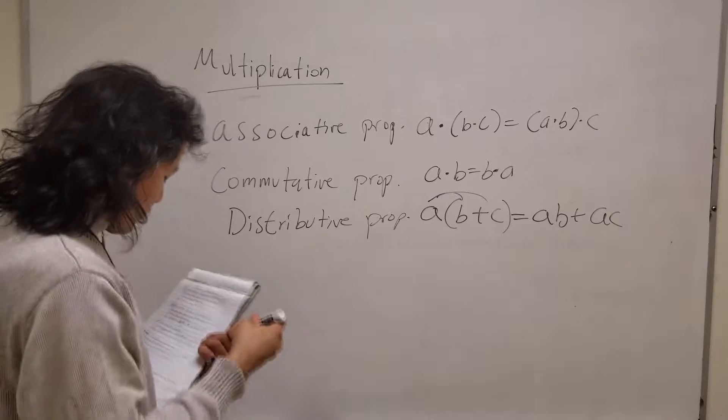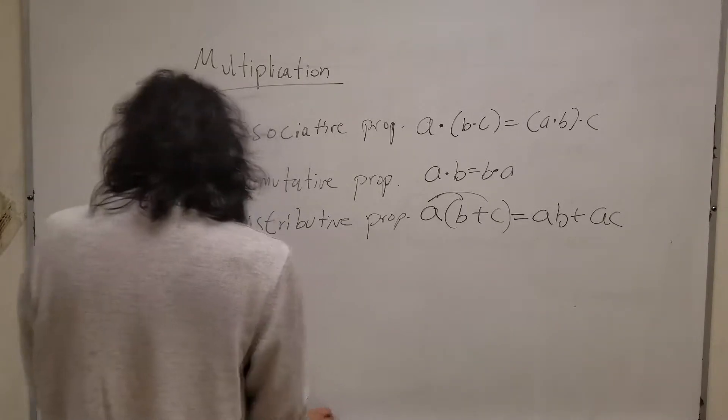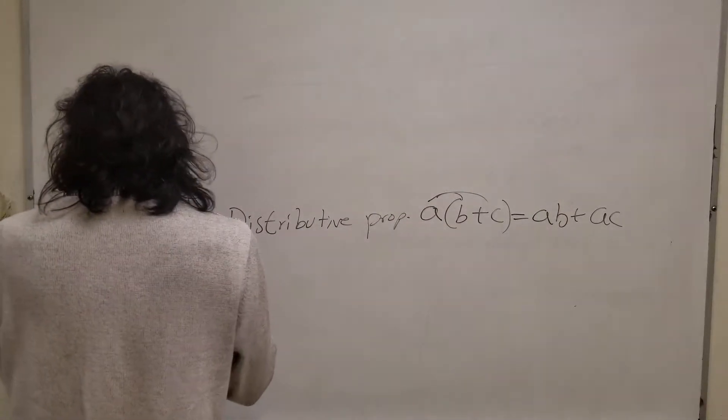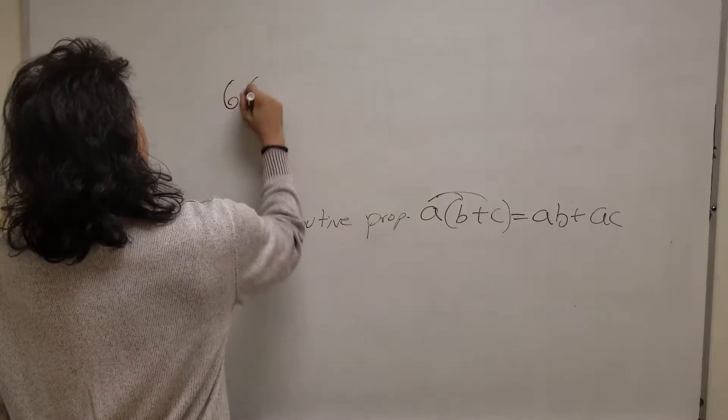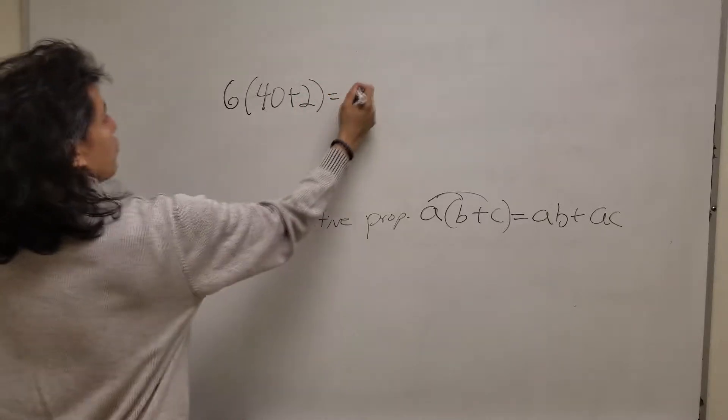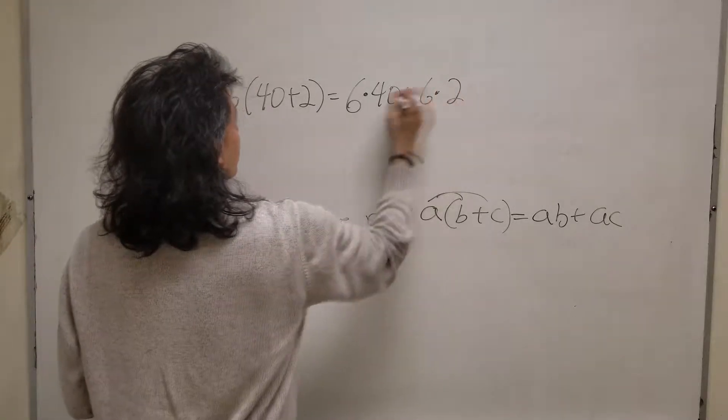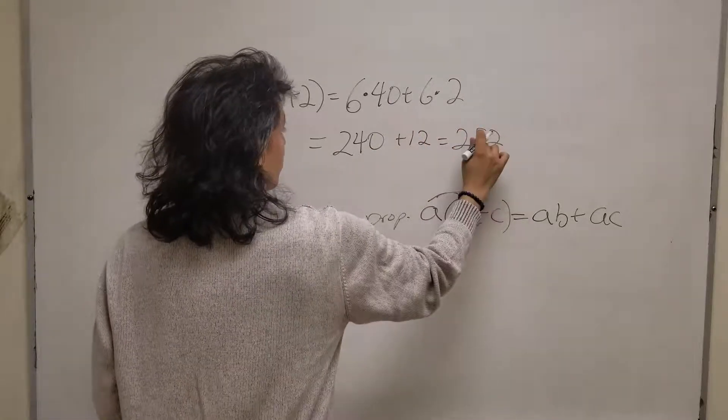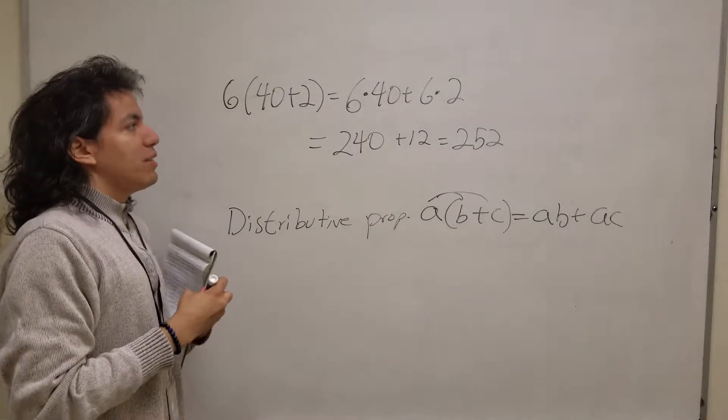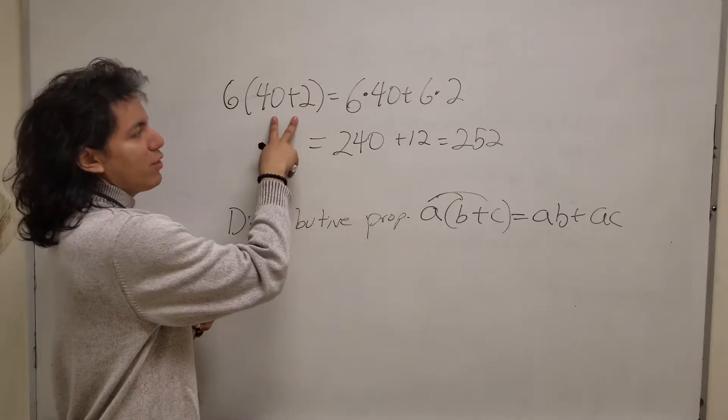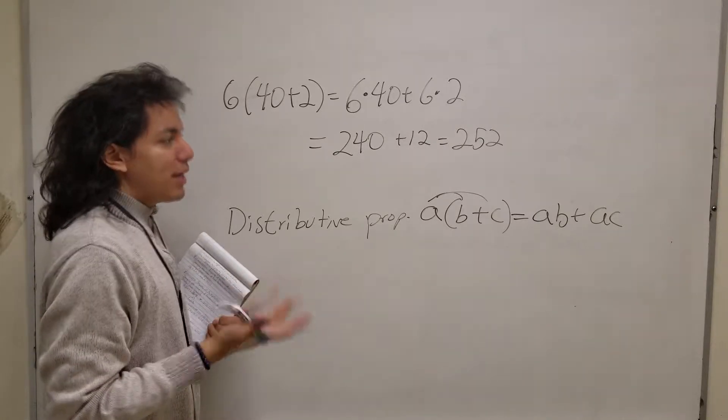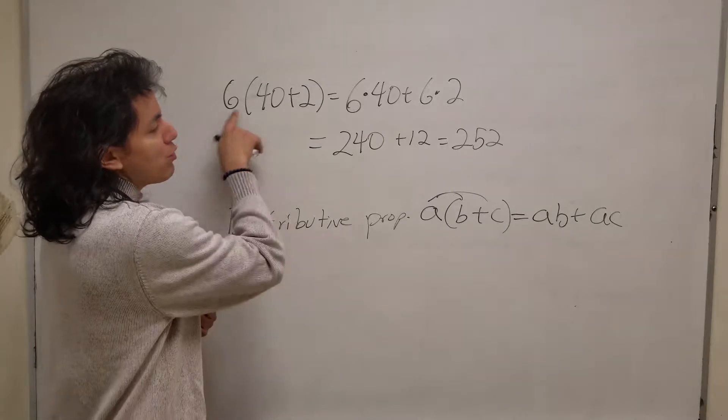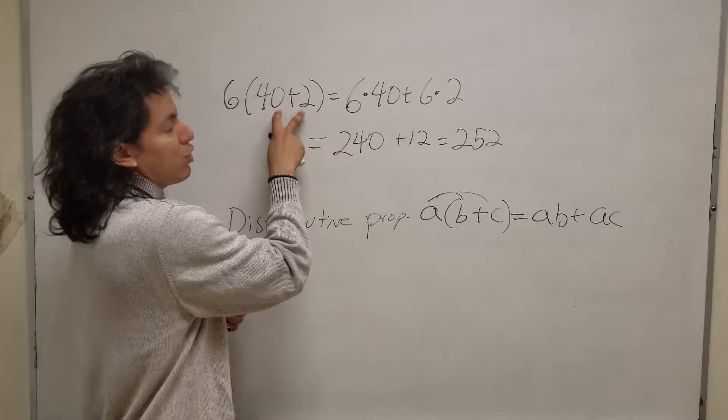So real quick let's understand what does that mean to do the distributive property. A nice little example would be let's take 6 times 40 plus 2. You distribute this as 6 times 40 plus 6 times 2. Well this is 240 plus 12, 252. Now a lot of people would state but Roger I could have simply just added the 42 and had 6 times 42 instead, and my answer to you is yes you could have done that as well. That's always available as an option, you don't have to do everything exactly as told, but when you're using distributive property it's going to be useful when you won't be able to combine the terms in the middle.